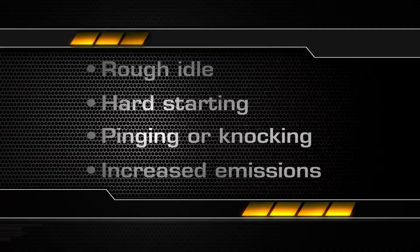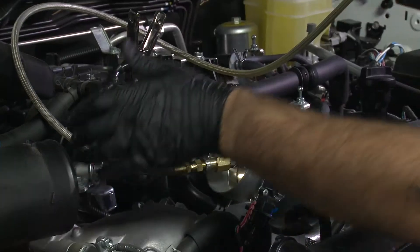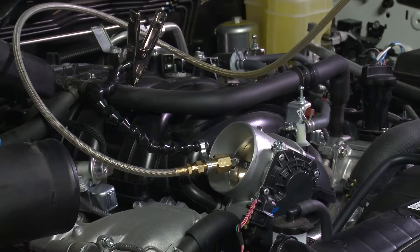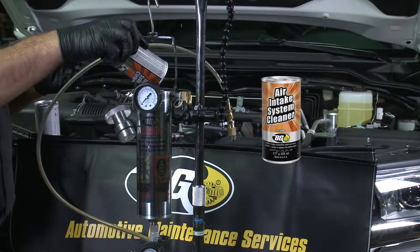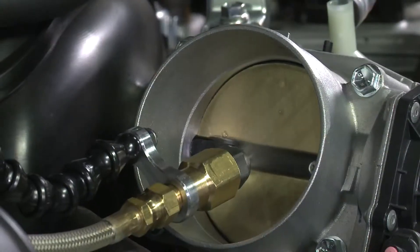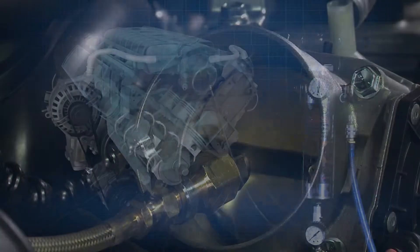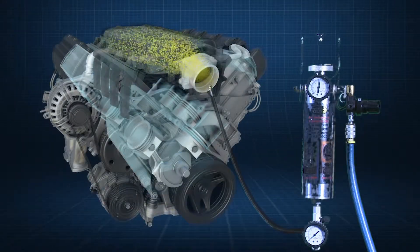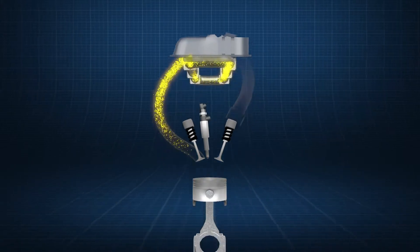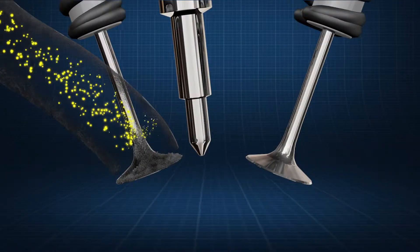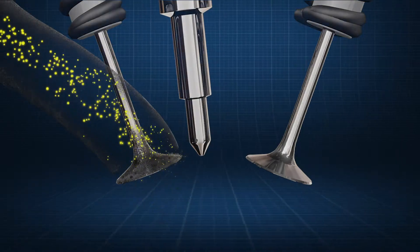A technician uses a BG atomizing tool to directly apply BG air intake system cleaner, part number 206M, into the vortex of the air intake system. This cleans deposits that restrict air in the plenum, manifold, and down through the air intake ports. This service loosens deposits allowing them to be removed and burned in the combustion process safely.